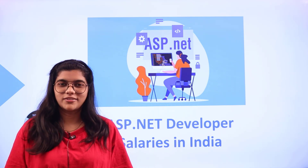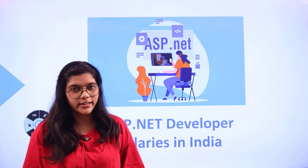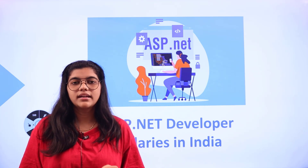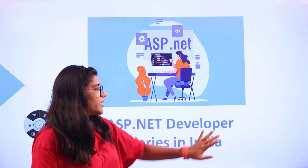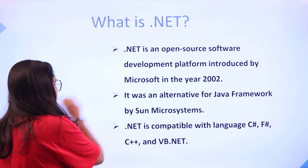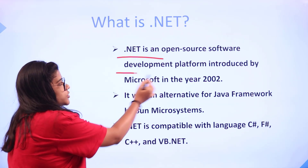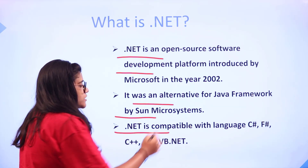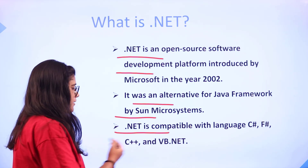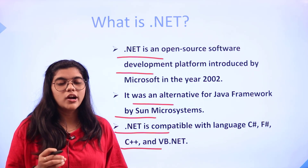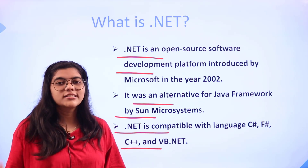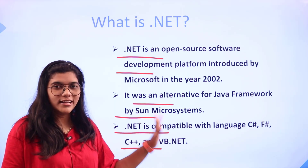According to Microsoft, there is no official full form for .NET or ASP.NET. It is a product and software that came out of Microsoft, helpful in developing various applications including web, desktop, and mobile. .NET is an open source software and development platform, serving as an alternative to Java's framework by Sun Microsystems. It is compatible with multiple languages such as C#, F#, C++, and VB.NET. In total, there are 30+ languages incorporated under .NET, with C# being an extension of C++.